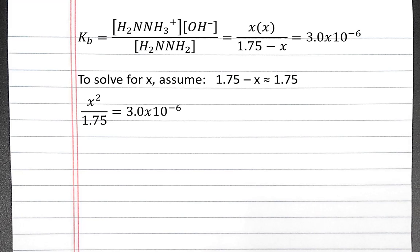So looking at our equilibrium constant expression, it becomes x squared divided by 1.75 equals 3 times 10 to the negative sixth. The next step is to multiply both sides by 1.75. So x squared equals 5.25 times 10 to the negative sixth. To solve for x, we can take the square root of both sides. And we'll find that x equals 2.29 times 10 to the negative third.